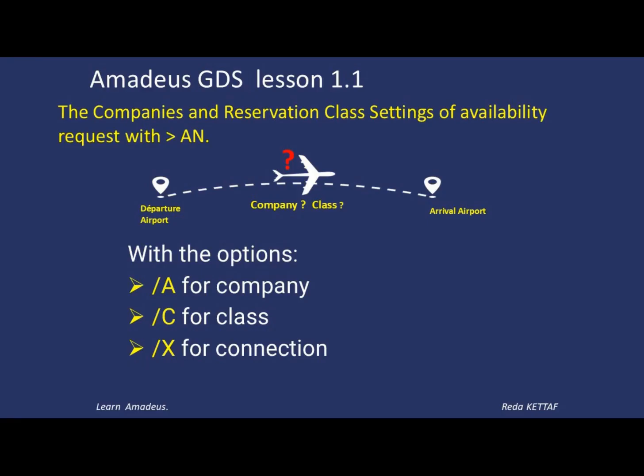I ask you to follow the next lesson, which still concerns flight availability requests, but with the option slash A for Airline, slash C for a request for certain classes, and to request availability of flights by correspondence — for example connecting flights.